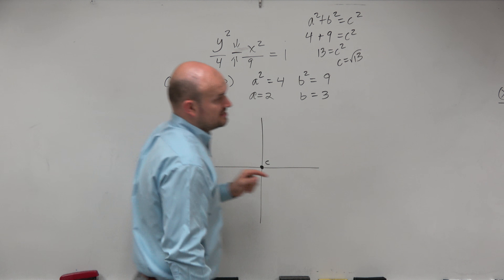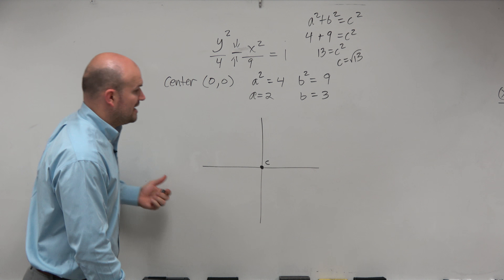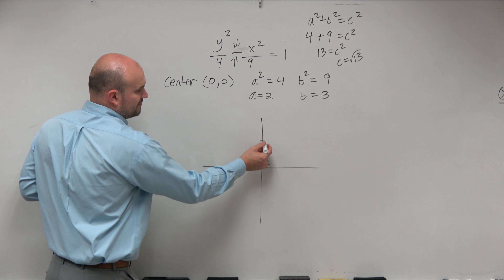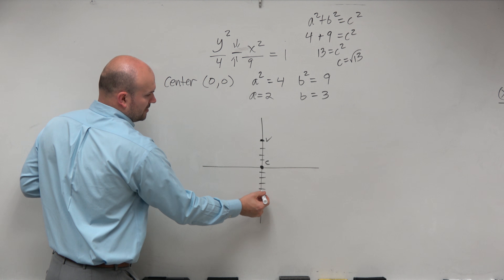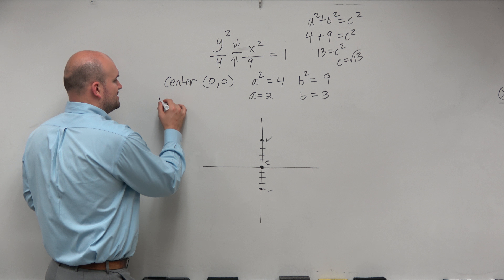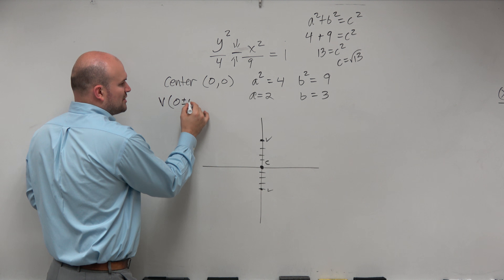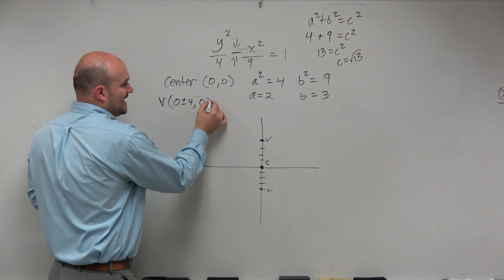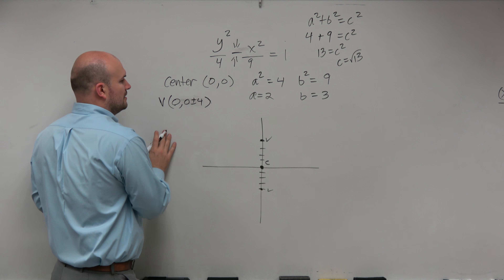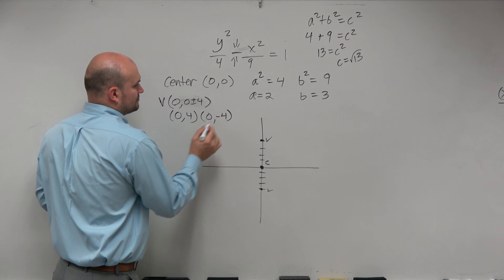The transverse axis is the axis where the foci and the vertices lie on. So that means from the center, to find my vertices I need to go up 2 and down 2. So my vertices are basically the y-coordinate of my center plus or minus 2, which would be written as 0, 2 and 0, negative 2.